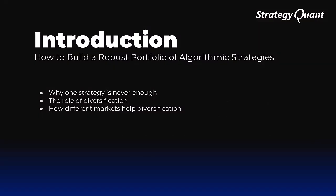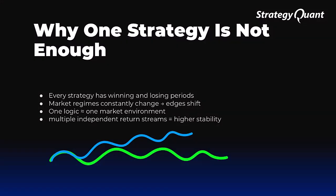One of the most important components of successful algorithmic trading is portfolio construction. A single high-performing strategy may look convincing, but every strategy goes through natural performance cycles — periods when it performs exceptionally well and periods when it loses its edge. These cycles are driven by changing volatility, shifting market structure, trend strength and macroeconomic conditions. Because one logic only fits one specific market environment, relying on a single optimized system never works in the long run.